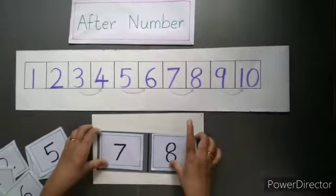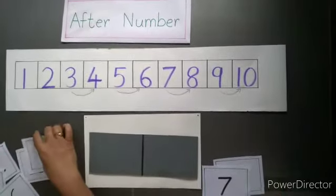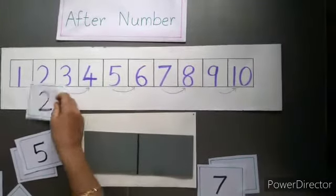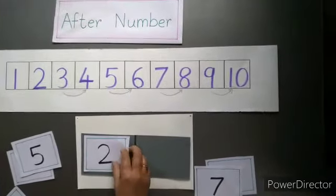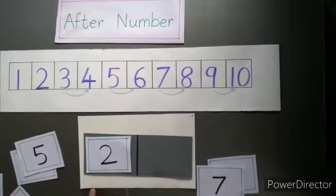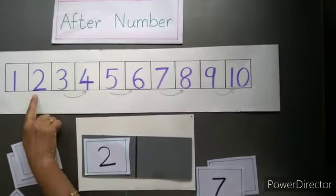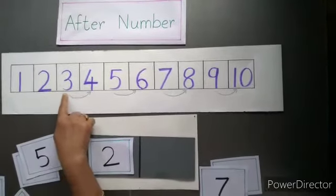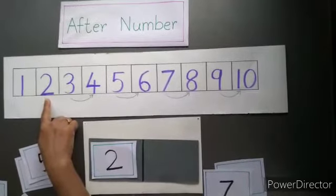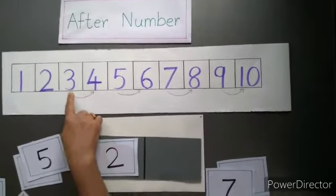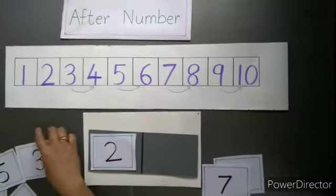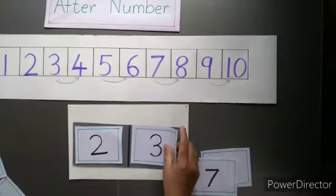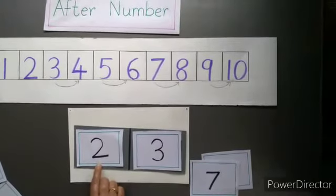Now here is number 2. Which number comes after number 2? I am moving my finger forward — that means it is forward counting. So what comes after 2? It is number 3. Number 3 is just after number 2. So here we can say: number 3 is after number 2.